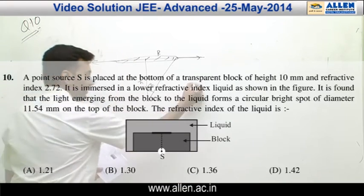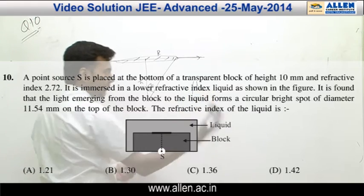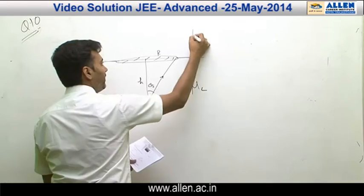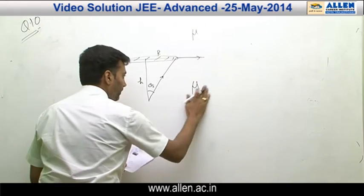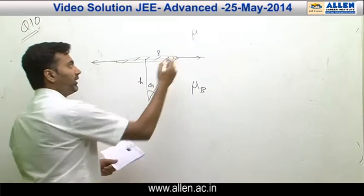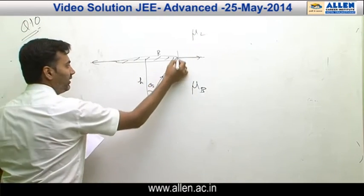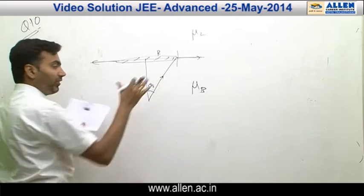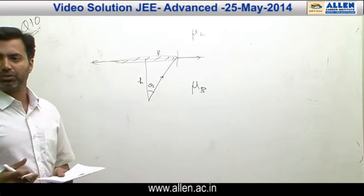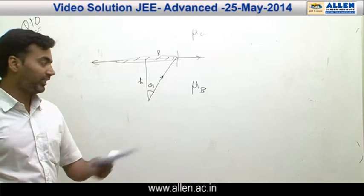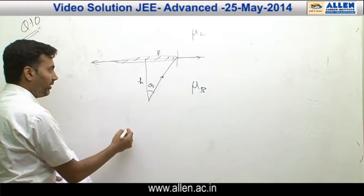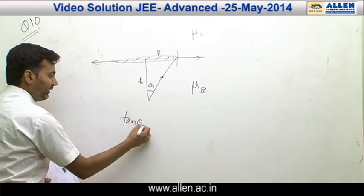straight away it implies the block would be the denser medium and then you have this liquid outside. And you have this ray grazing out so that you have a circular spot formed at the top. Very common questions as you see in all your sheets. So by geometry you have tan theta c equals